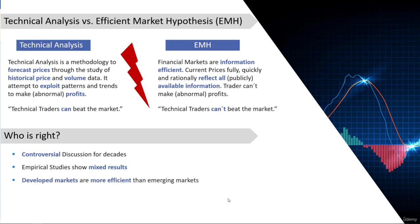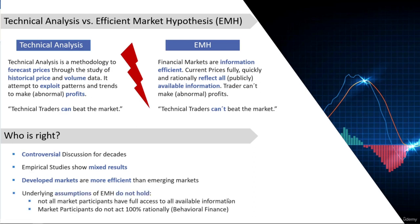Developed markets are more efficient than emerging markets — highly efficient but not perfectly so. Some of the most important assumptions of EMH simply do not hold. EMH assumes all traders have full access to all available information and act 100% rationally. However, retail traders don't have access to all information, and hardly any trader acts 100% rationally. Behavioral finance is a newer but well-accepted field of study examining the reasons for irrational behavior in the market.